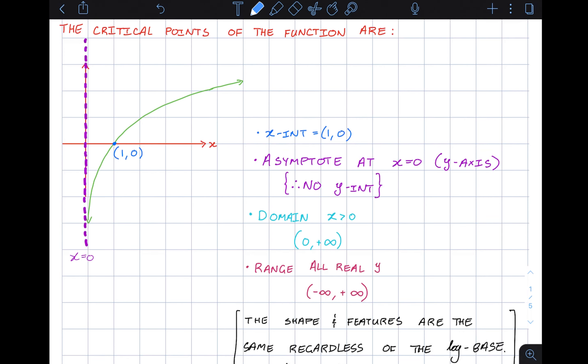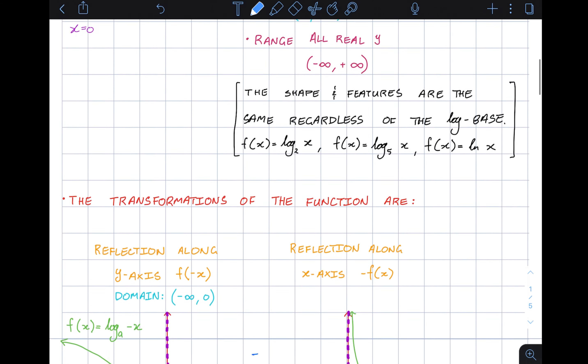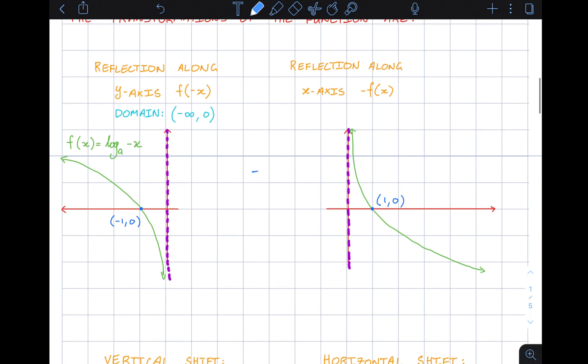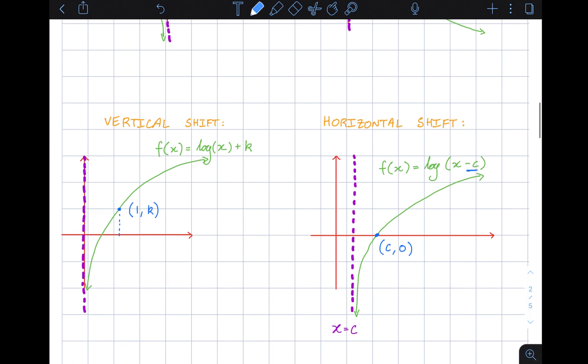Continuation on graphing logarithmic functions. In the previous video we saw the general shape and critical points: x-intercept, asymptote, domain and range. We also saw brief sketches of what the transformations might look like.